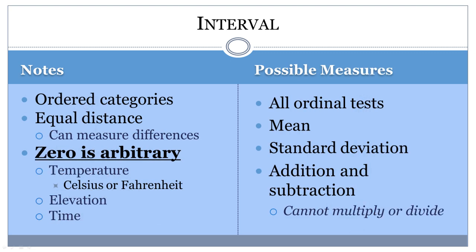Since the distance between points on the scale is measurable and equally split, it is possible to do more statistical tests with the data. The mean, median, and mode can all be calculated with interval data. The standard deviation can also now be calculated. However, the problem with performing statistical tests on interval scales is that they don't have a true zero. Therefore, it is impossible to multiply, divide, or calculate ratios.